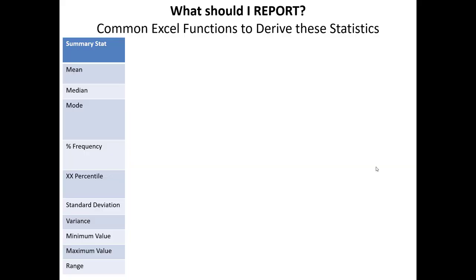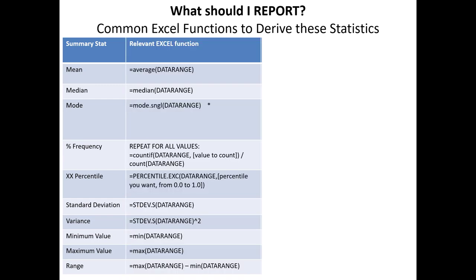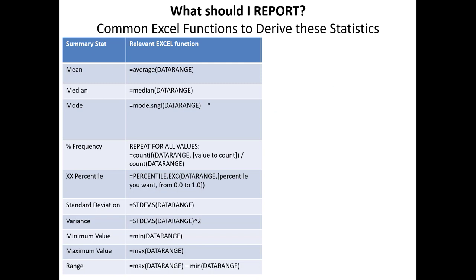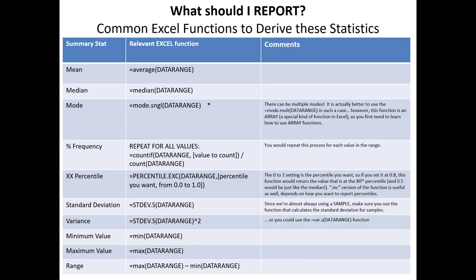Now we're going to illustrate quite a few of these examples in the next part of the video. If we're going to report these different summary statistics, in Excel we need to be aware of the common functions we use to derive these statistical values. They're briefly listed here, and we're going to show some of these in action using Excel. This cheat sheet is available to you showing all the functions aggregated in one place. Basic Excel functions are always easy to Google or find on YouTube for additional help beyond what we cover in this tutorial.